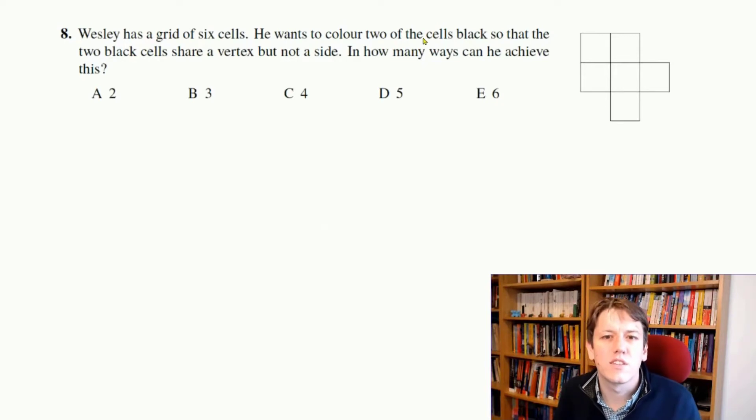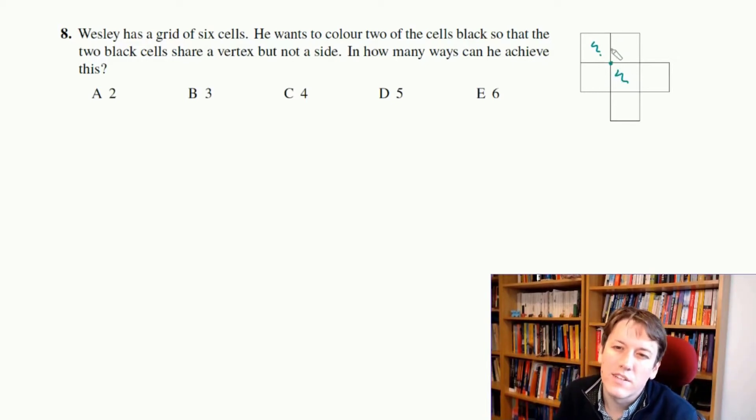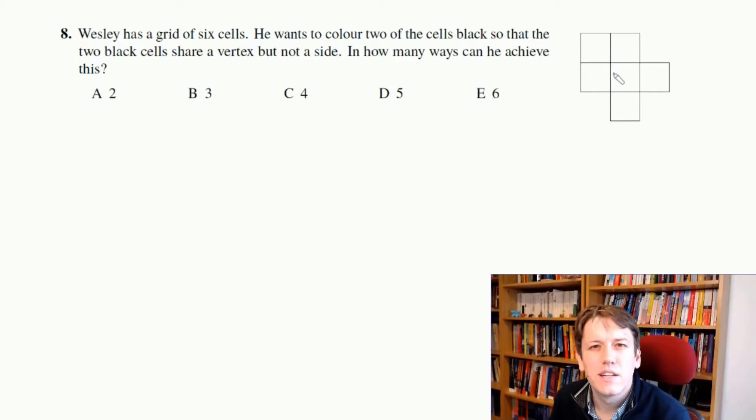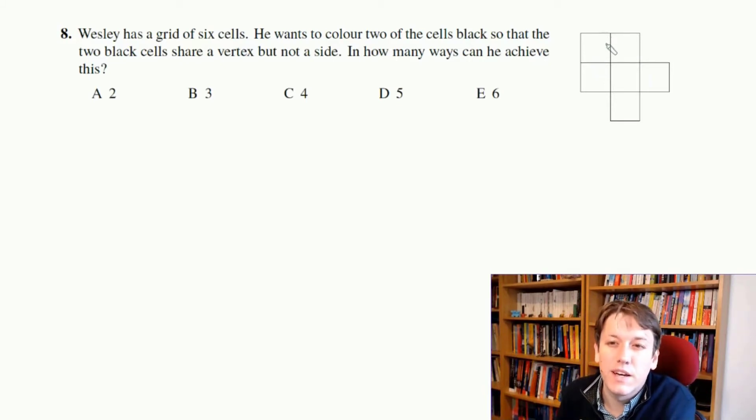So it says, Wesley has a grid of 6 cells, he wants to color 2 of the cells black, so the 2 black cells share a vertex but not a side. How many ways can he do this? So sharing a vertex but not a side means something like this, right? So it could be these 2 here, right? They share this vertex, a vertex is a corner, but they don't have a side in common here. So I can do those 2, but I couldn't do those 2 because they have a side in common. Right, so let's start writing these down. Now to make sure we get them all, I'm going to go through systematically and start with everything that I can make with the first square, and then the next one, and then I'll know I've got them all if I do them systematically.